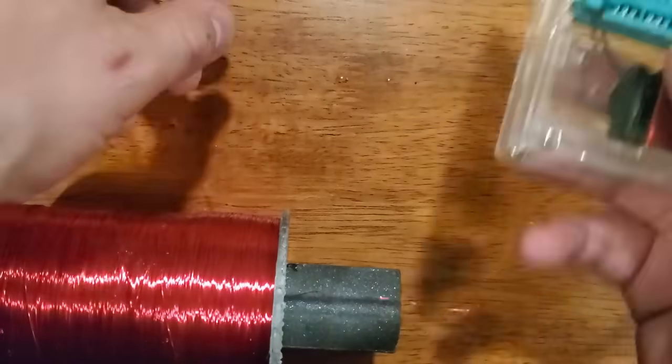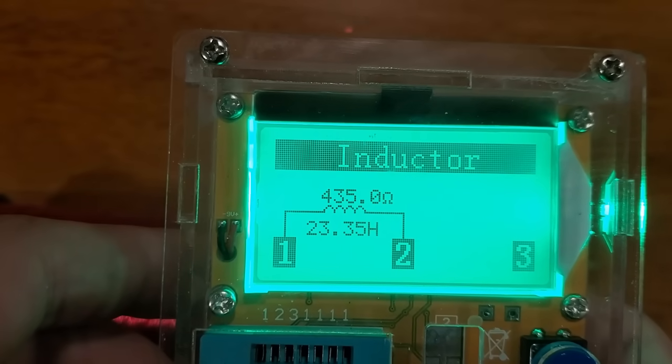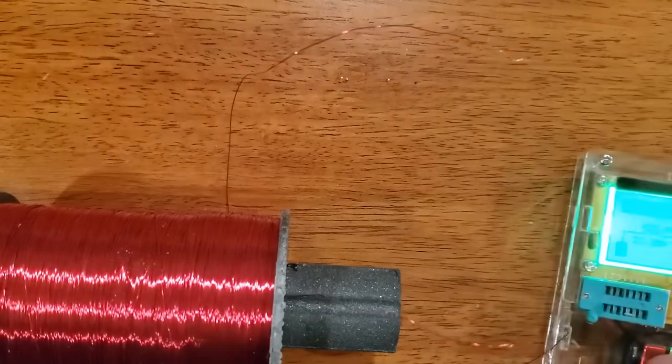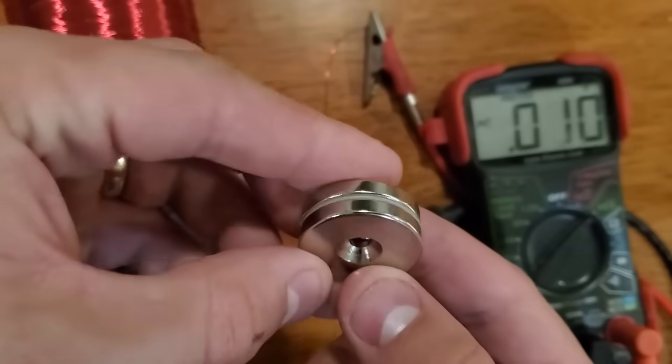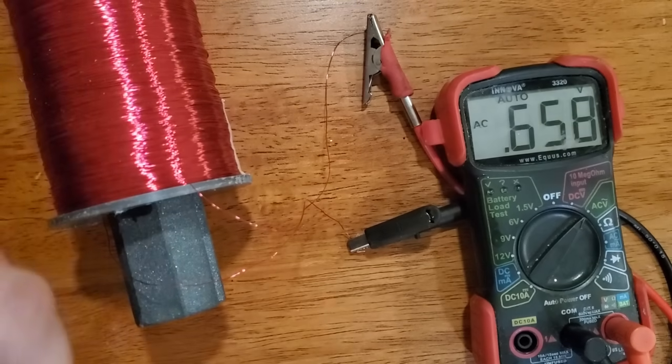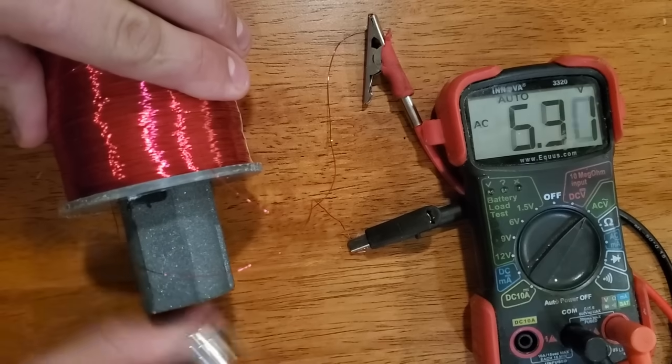The coil measured in at a whopping 23 henrys on the LC meter. It's probably even more than that because the meter tends to read low a lot of the time. By waving this small neodymium magnet back and forth in front of the coil face, I could easily generate more than five volts open circuit. The coil was obviously extremely sensitive to alternating magnetic fields.